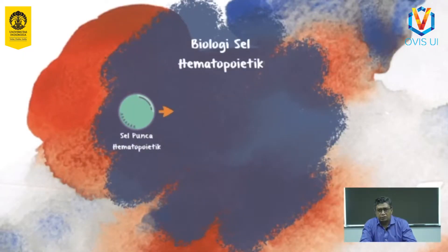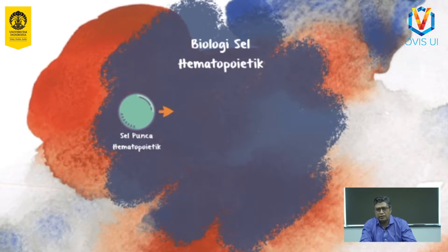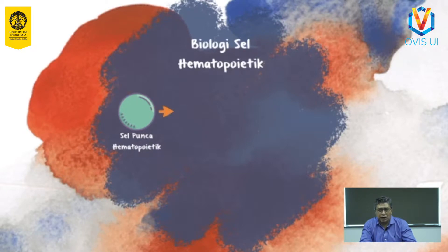Sekarang kita akan mempelajari tentang biologi dari sel-sel hematopoietik, terutama bagaimana sel darah dapat diproduksi. Seluruh sel darah sebenarnya berasal dari satu sel punca yang sama, yaitu sel punca hematopoietik. Sel punca ini ada sepanjang umur hidup manusia dan juga memiliki sifat multipoten, yang berarti sel ini memiliki kemampuan membelah dan berdiferensiasi menjadi banyak jenis sel, serta memiliki kemampuan untuk memperbarui diri sendiri. Kemampuan untuk berdiferensiasi dan menghasilkan sel punca yang serupa disebut self-renewal.